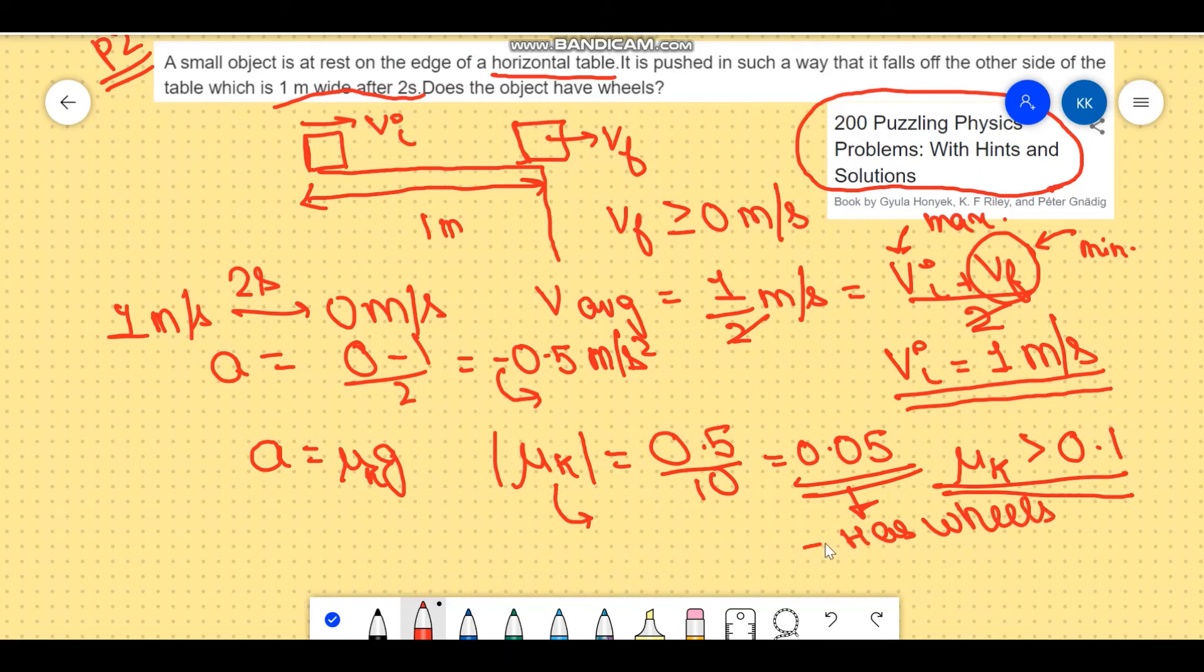It does not mean that the entire object is rolling. We can conclude that part of the object has wheels which reduces the coefficient of friction. So this is no longer kinetic friction, this is rolling friction, or it can be a mixture of the two as well if some part of the body is sliding while some part is rolling. So to answer the question: does the object have wheels? Yes it does.